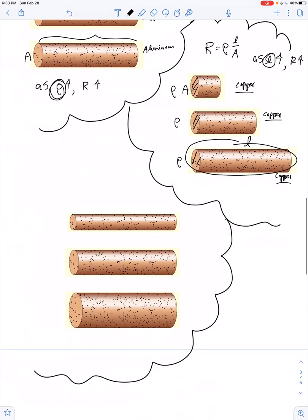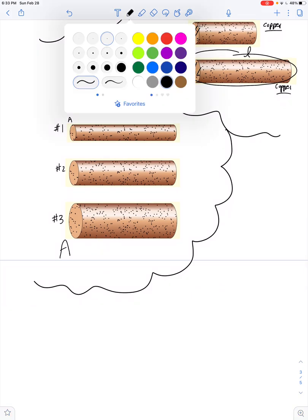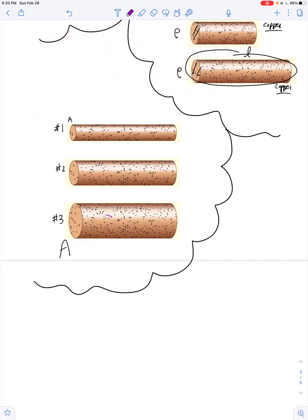If you increase the area, in case number one, there's a small cross-sectional area. In case number two, an intermediate value. And obviously in case number three, there's a really big cross-sectional area. So you might think with bigger area, there's a greater number of these impurities for the electron to collide with.